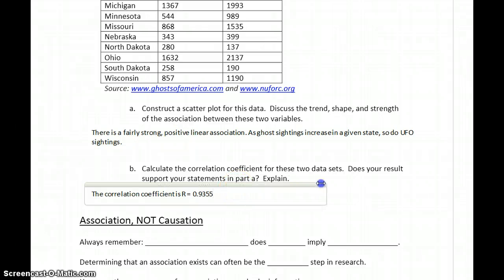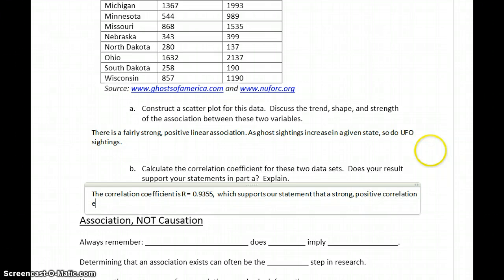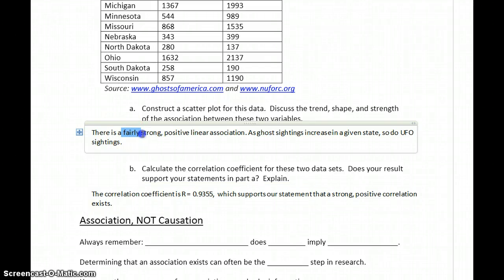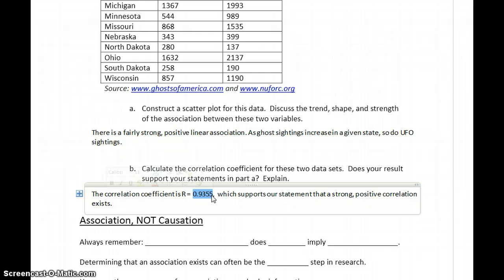Again, depending on how many decimal places we want to round that to, which supports our statement that a strong positive correlation exists. So actually in this case, this number comes out to be closer to one than I might have guessed based off my visual inspection of that. I was guessing that was a fairly strong association, but in this case we're getting values that are above 0.9, so we're getting very close to that value of one, which means we've got a very strong association between those two.